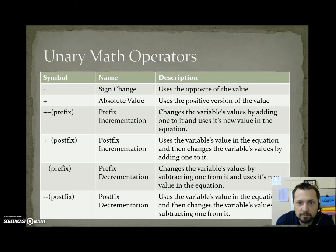Unary math operators. First one we have is minus, which is used for sign change. It uses the opposite of a value. Plus can be used for absolute value, uses the positive version of the value. Plus plus prefix, or prefix incrementation, changes the variable's value by adding one to it and uses the new value in the equation. Plus plus postfix, known as postfix incrementation, uses the variable's value in the equation and then changes the variable's value by adding one to it.